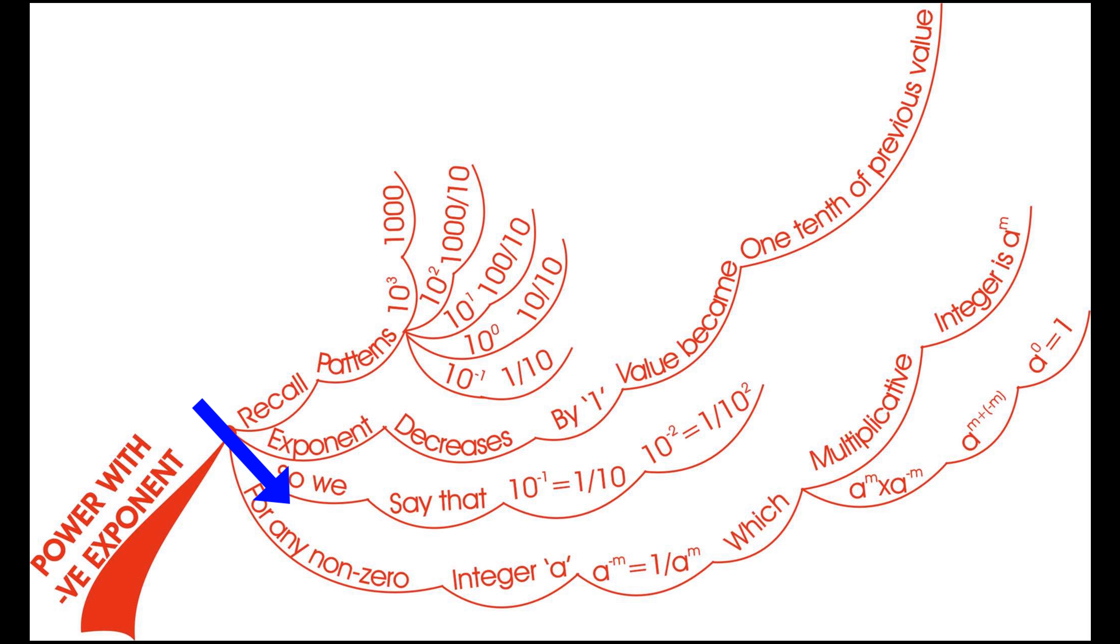In general, we could say that for any non-zero integer a, a power minus m is equals to 1 by a power m, which is the multiplicative inverse of a power m.